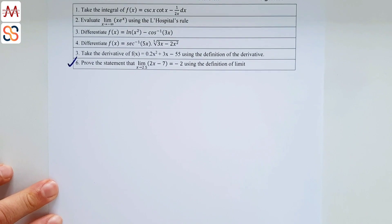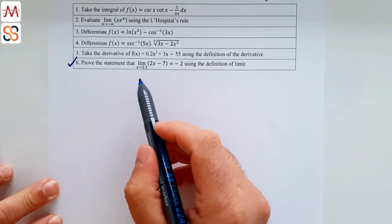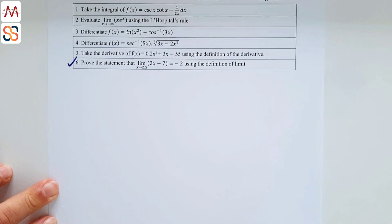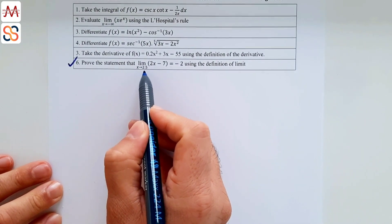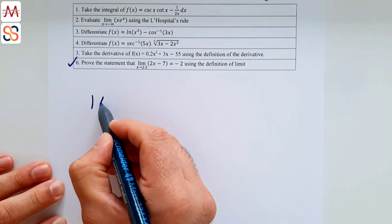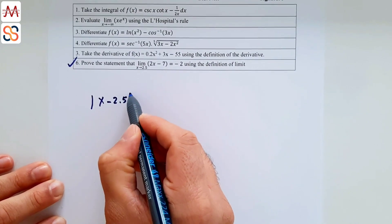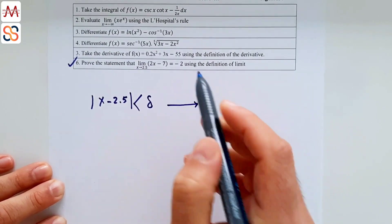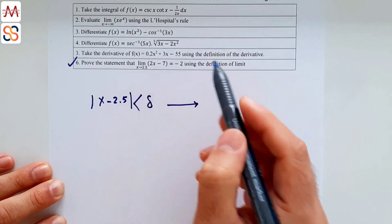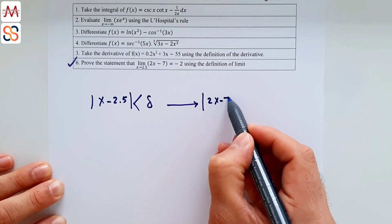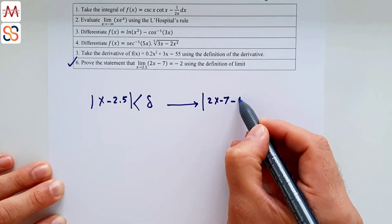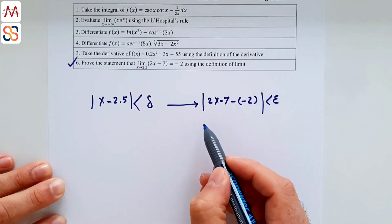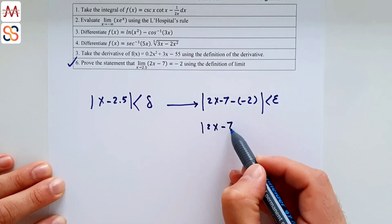Question 6: prove using the epsilon-delta definition that lim(x→2.5) of (4x - 7) = -2. This means: if |x - 2.5| < δ, then |f(x) - L| = |(4x - 7) - (-2)| < ε. Simplifying: |4x - 7 + 2| = |4x - 5| < ε.